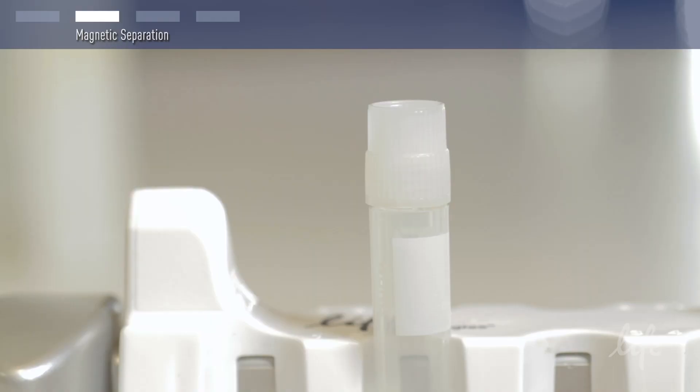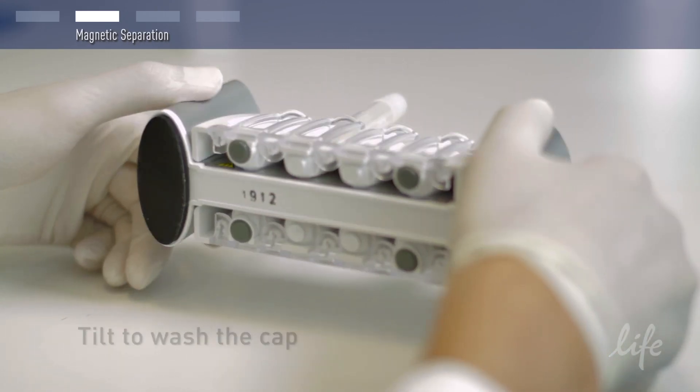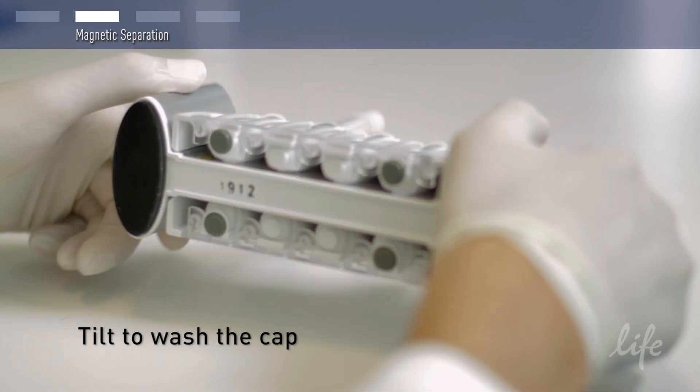If you use tubes with a cap, you should tilt the whole magnet to make sure you don't lose any beads and cells that might be in the cap.